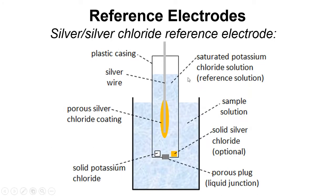For the reference electrode, we have the silver wire with the silver chloride coating, a reference solution of saturated potassium chloride, and the liquid junction is formed by the diffusion of KCl across the junction, which minimizes the liquid junction potential. Within the saturated potassium chloride solution, we first add some solid silver chloride so that the solution becomes saturated in silver chloride — this prevents the coating from dissolving. We also add some solid potassium chloride so that if KCl diffuses out, the concentration can be maintained at saturation.